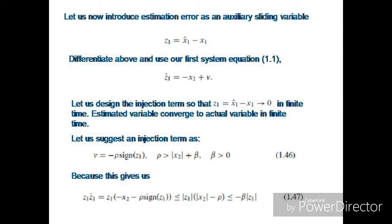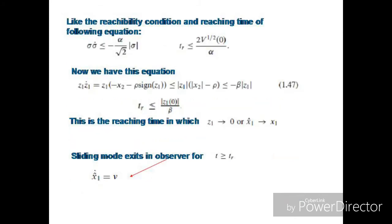We suggest an injection term: nu = −rho * sign(Z1), where rho > |x2| + beta and beta is a positive real number. This is to satisfy the reachability condition: the product Z1 * dZ1/dt = Z1 * (−x2 − rho * sign(Z1)) is always less than or equal to |Z1| * (|x2| − rho), which is always less than −beta * |Z1|, because rho > |x2| + beta as defined in equation 1.46.